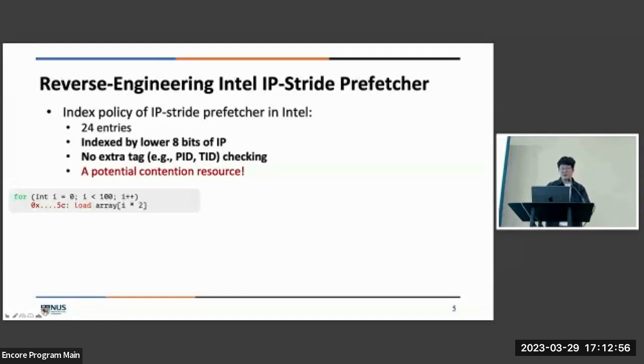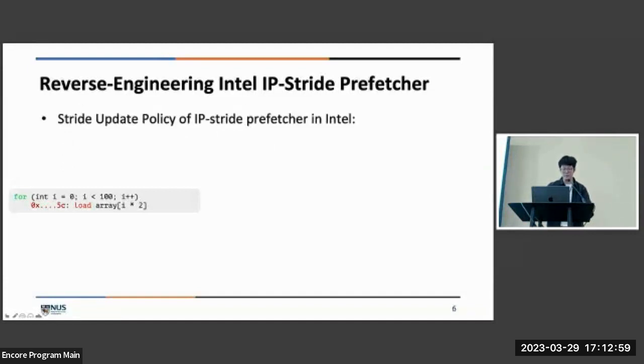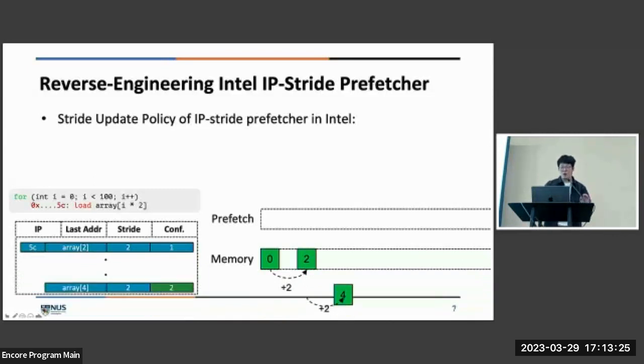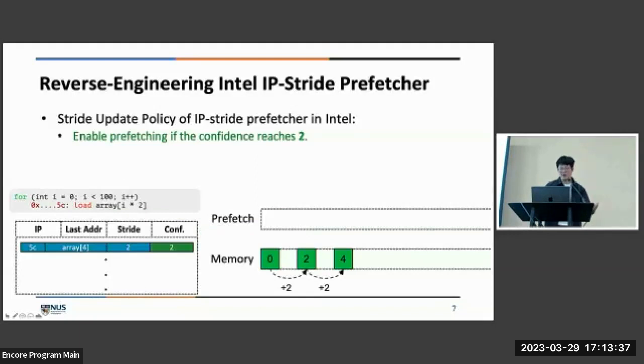We then spent time on understanding the stride update policy. Consider the below example. The load instruction will first access element 0 of the array and the IP and other information will be inserted into an entry of the prefetcher. Then we access element 2. The stride and the confidence are then updated. When we access element 4, we found that the prefetcher starts prefetching things. This implies that the confidence threshold in Intel is 2. And also element 6 will be brought into the cache.